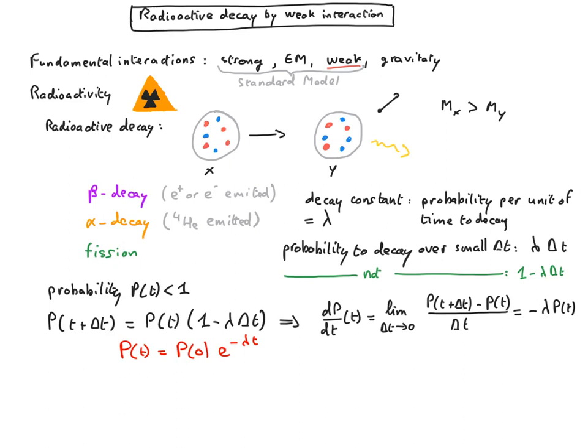Radioactive decays are exponential in time. It is usual to define the lifetime as tau equal 1 over lambda, in such a way that p of t is p of 0 exponential minus t over tau.